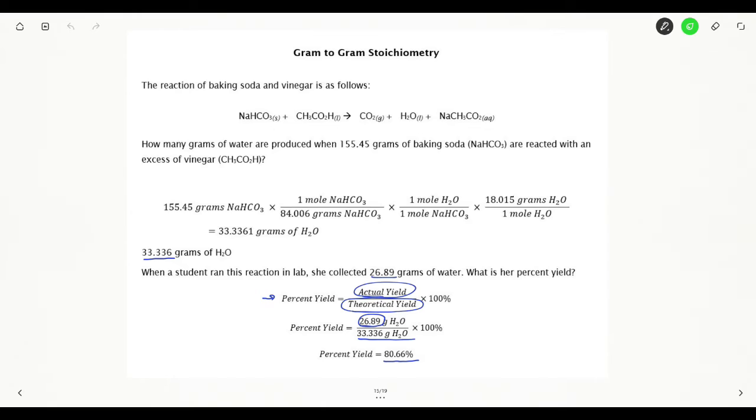This is how I did sig figs for the gram-to-gram stoichiometry. Again, I'm just doing multiplication division, so I'm counting up total number of sig figs.